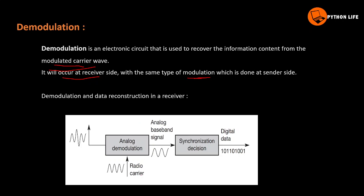This is the radio carrier. After the radio carrier, we recover the data. Analog modulation will produce analog signals, and that wave can be analog and digital. Analog baseband signals will be synchronized, and it can be digital or analog and digital. This is demodulation.